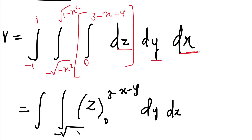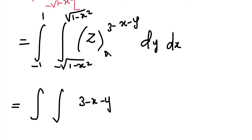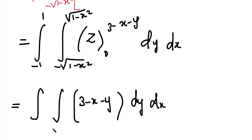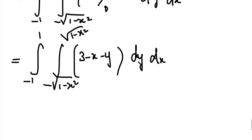Applying the limit 0 to 3 minus x minus y, the inner z-integration gives 3 minus x minus y. So we now have a double integral of (3 minus x minus y) dy dx, where y's limit is minus root of 1 minus x² to plus root of 1 minus x², and x's limit is minus 1 to plus 1. This expression has 3 terms.